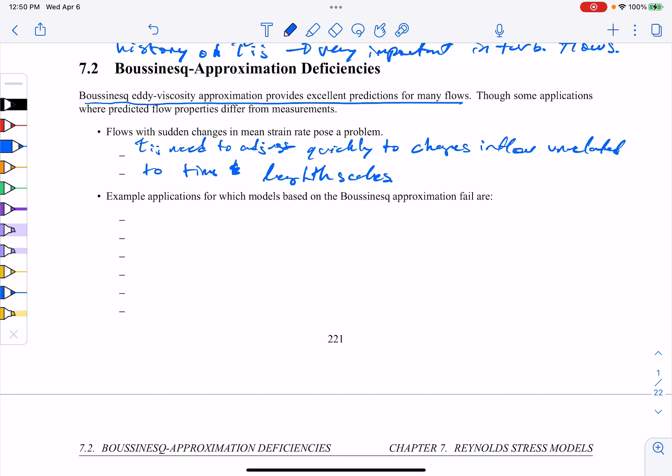Indeed, flows will experience extra rates of strain, which are caused by rapid dilatation, out-of-plane straining, or even streamline curvatures, all of which give rise to unequal normal Reynolds stresses. And then these approximations of Boussinesq would be a bit suspect.